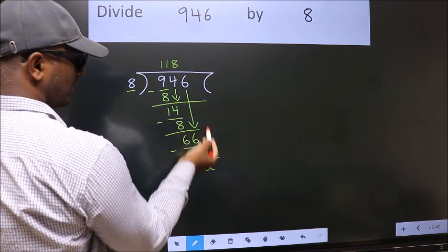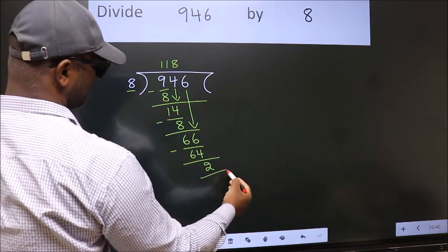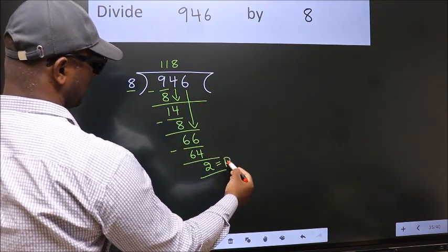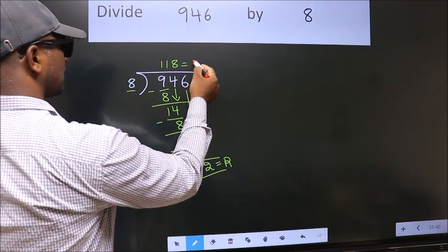No more numbers to bring it down. So, we stop here. This is our remainder. This is our quotient.